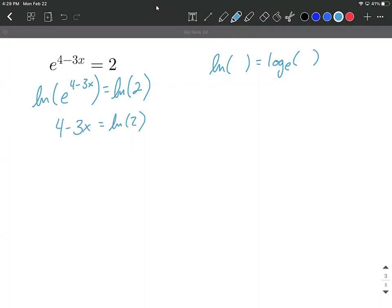Now we actually have a linear equation, because our x, our variable, is raised to the first power. All right, so to solve this down, we need to isolate x, get it on one side all by itself. So we're going to subtract the 4, move it to the other side. 4 minus 4 makes 0. So we have negative 3x equals the natural log of 2 minus 4.